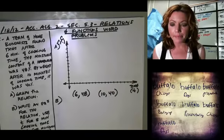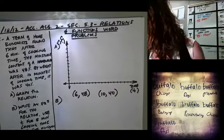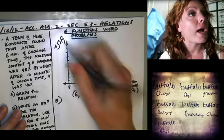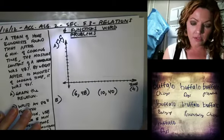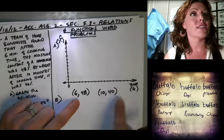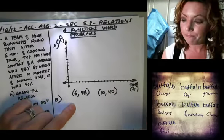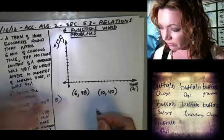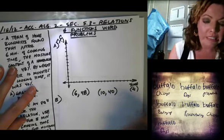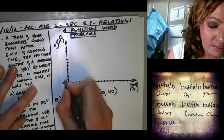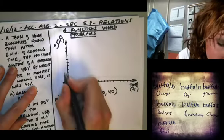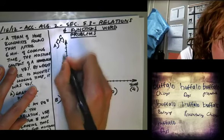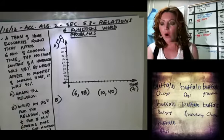We have no numbers on the graph yet. For the c-axis, we know we have to get up to at least 48 — percent probably goes all the way to 100. Let's go by tens: 10, 20, 30, 40, 50, 60, 70, 80, 90, 100.